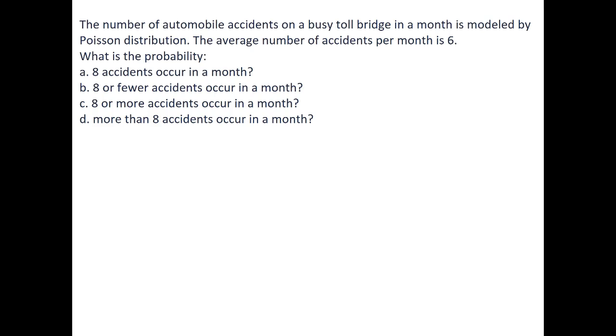In this example, the number of automobile accidents on a busy toll bridge in a month is modeled by a Poisson distribution. The average number of accidents per month is 6. Because the average is equal to lambda, our parameter lambda will be equal to 6. That means our probability mass function will be equal to 6 to the x e to the negative 6 all over x factorial.